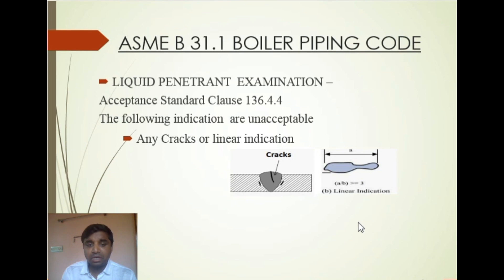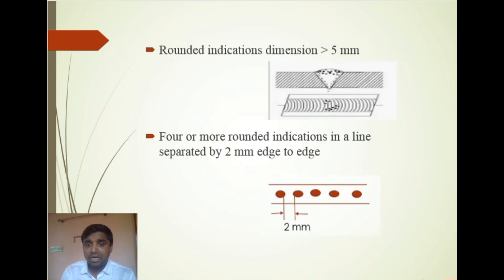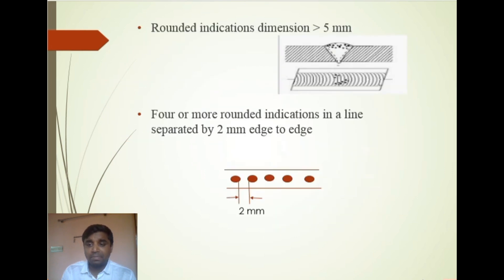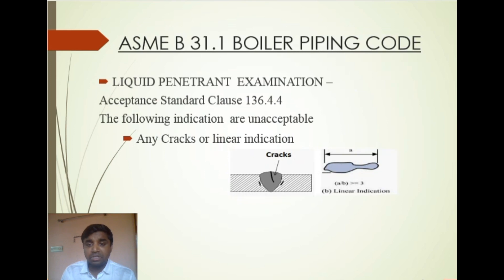For liquid penetrant examination, the acceptance standard clause is 136.4.4 of ASME B31.1. The acceptance criteria are the same as for magnetic particle examination: any cracks or linear indications are unacceptable; rounded indications with any dimension greater than 5 mm are unacceptable; and four or more rounded indications in a line separated by 2 mm edge-to-edge are also unacceptable.